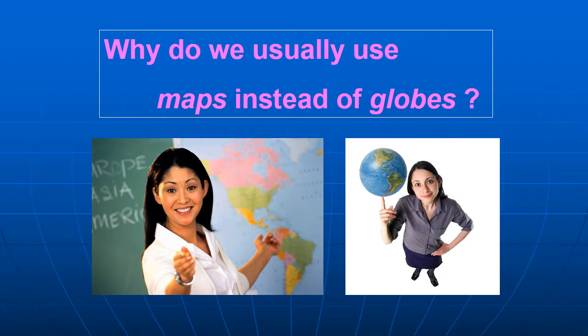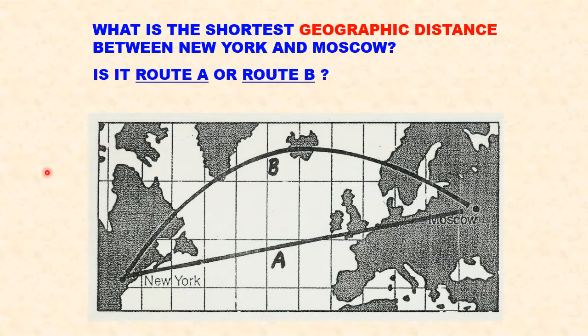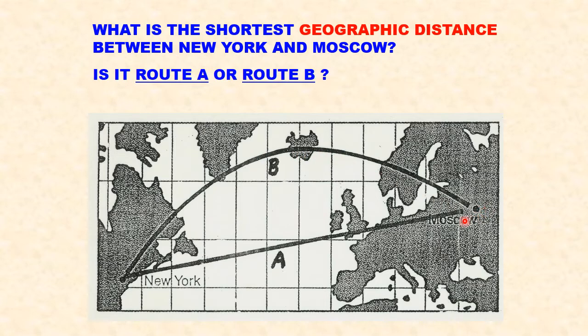This is the Chapter 2 lecture notes, Part 4. Last time I posed this question: what's the shortest geographic distance between New York and Moscow? Would it be route A or route B? You have to look at a globe to understand, but actually the shortest geographic distance would be to fly over Iceland, not take this big dog-leg out through the North Atlantic.